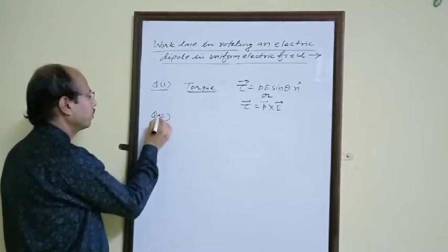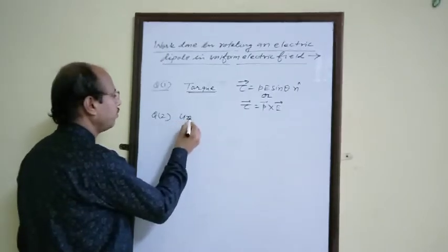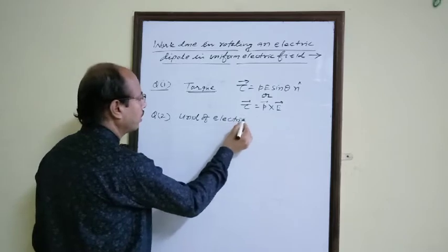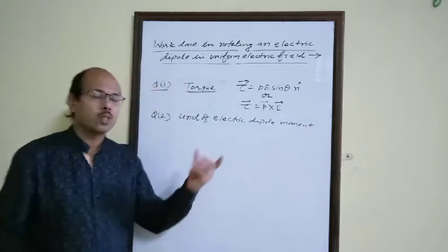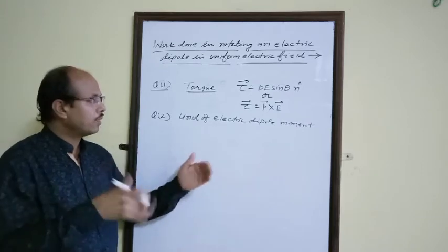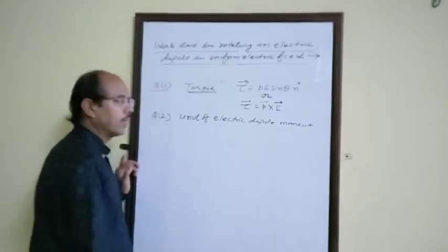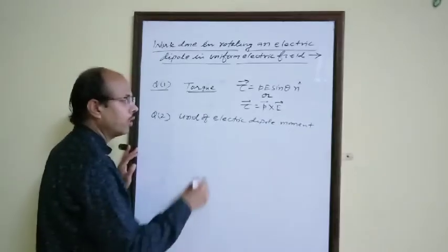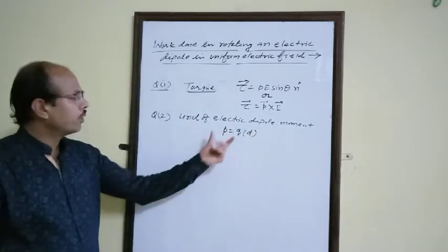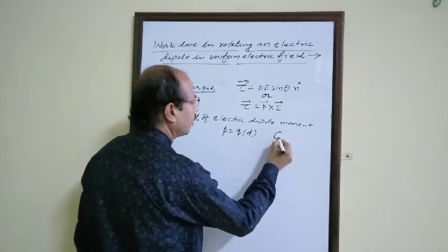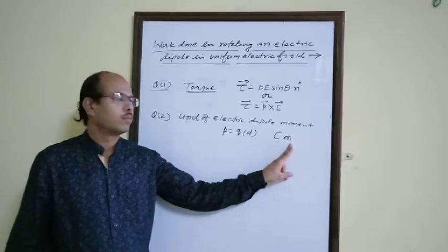Revision Question 2: What is the unit of electric dipole moment? Using the formula P equals Q times d, the unit of electric dipole moment is coulomb-meter.